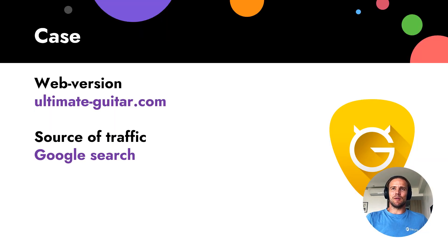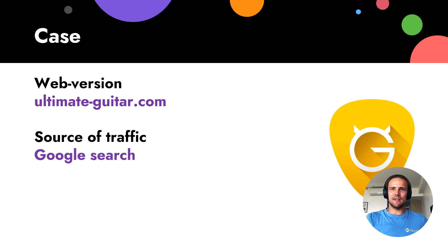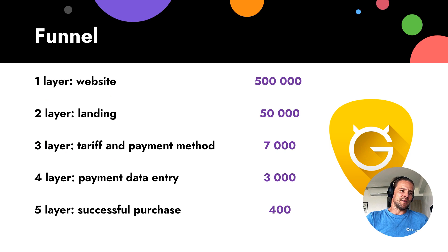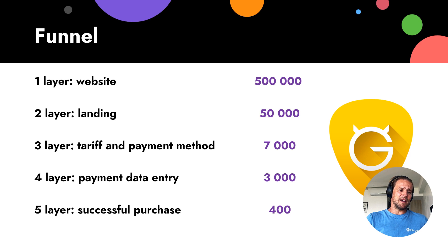Ultimate Guitar is the number one website if you play a music instrument. Whether you are a beginner or a pro, you will know it and use it. The main traffic source is Google. They have five layers: layer one is the website with half a million users, layer two is different landings, layer three is payment methods, layer four is where you enter payment data, and layer five is where you complete the purchase.